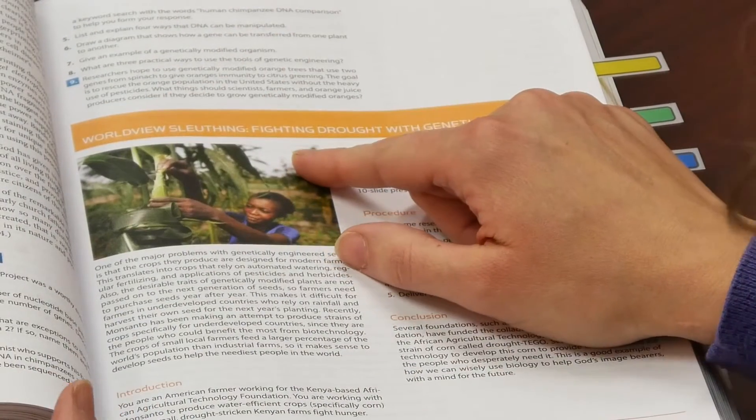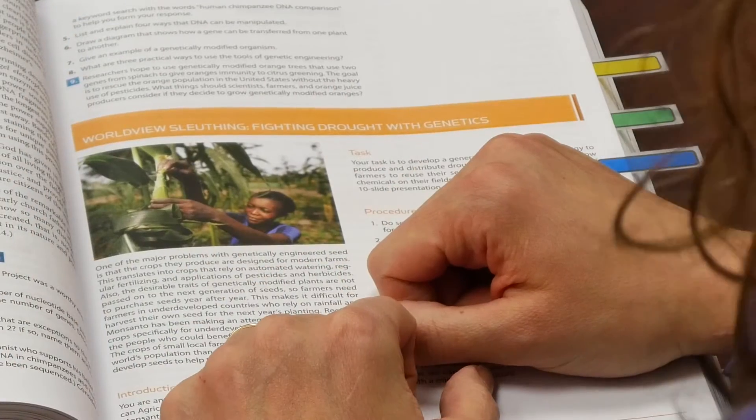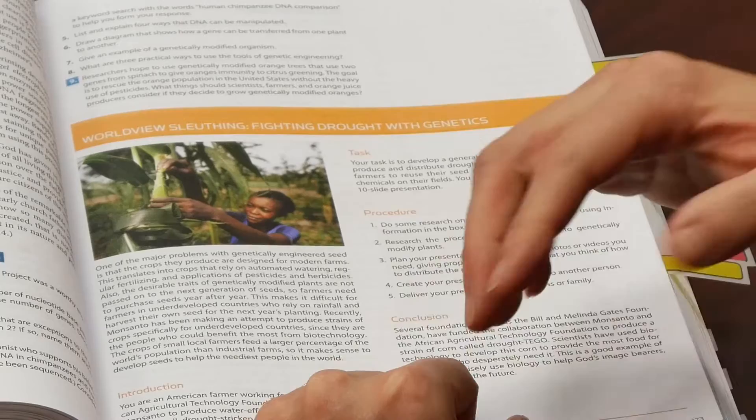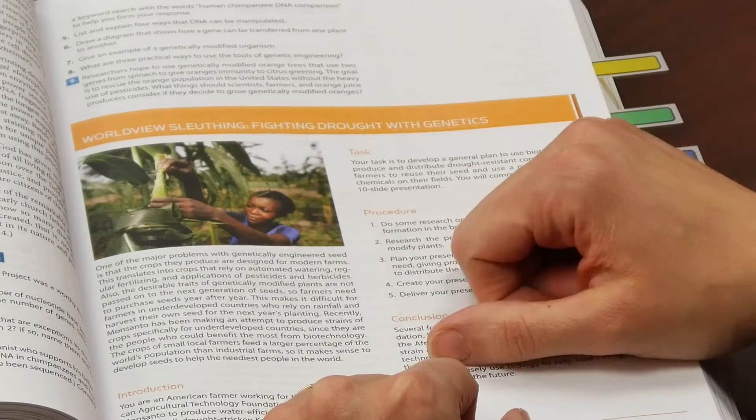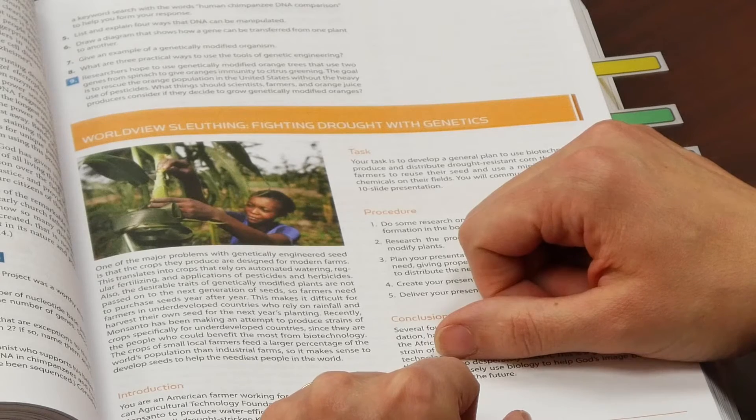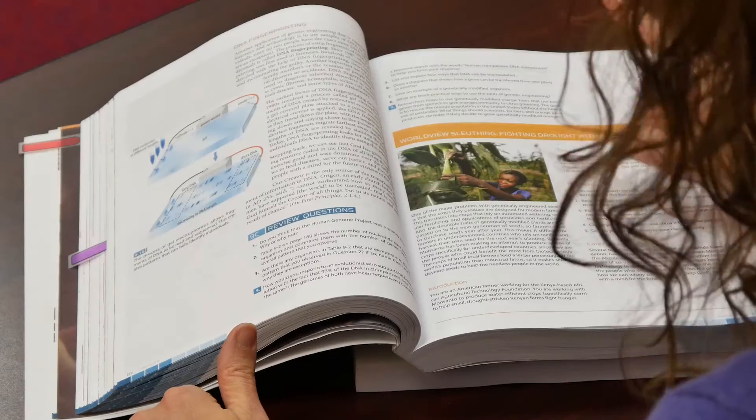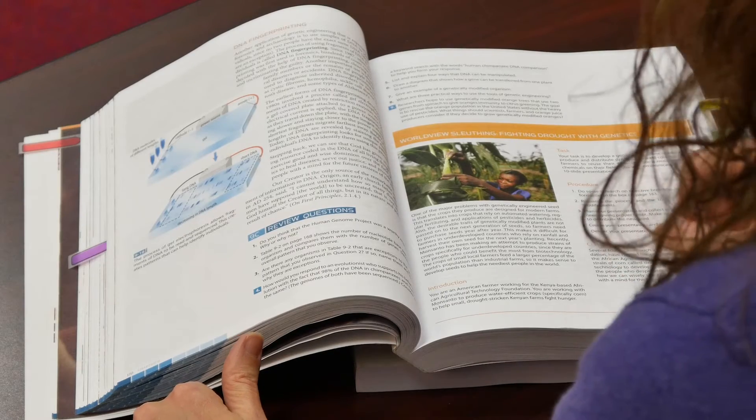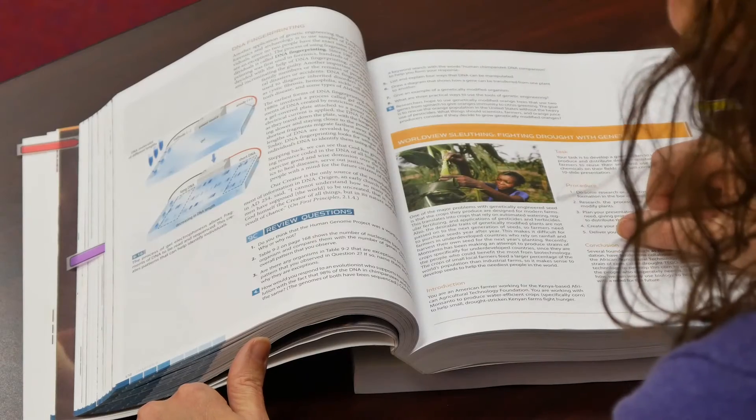We're not just talking about them in the text. We're also having the student interact with the content and come to their own conclusions. This is a worldview sleuthing box where students will go out, do some internet research and produce some kind of product. In this one they're going to be producing a presentation about geoengineering and agriculture from a Biblical worldview. We're getting students to not just hear the topics but also to interact with them.